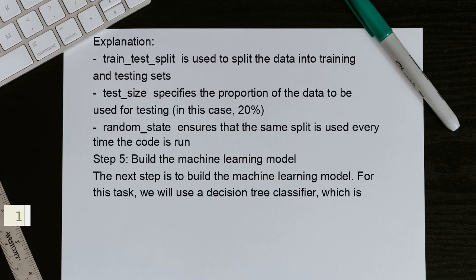Explanation: train_test_split is used to split the data into training and testing sets. test_size specifies the proportion of the data to be used for testing, in this case 20%. random_state ensures that the same split is used every time the code is run.